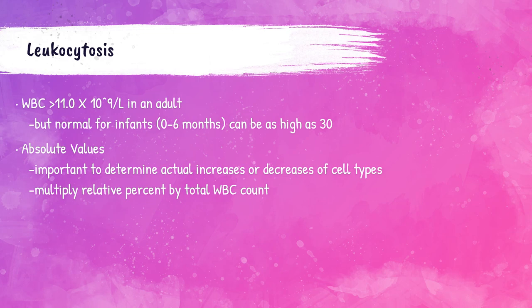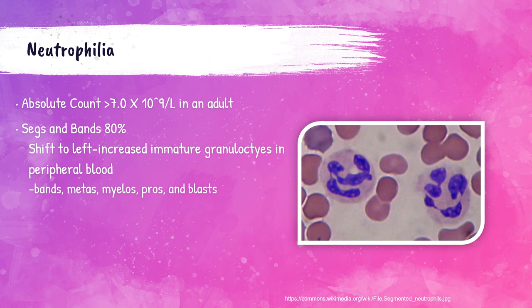Neutrophilia is defined as a neutrophil absolute count of greater than 7 times 10 to the 9th power per liter in an adult patient. Segmented or banded neutrophils will be 80% or higher. There is usually a left shift — an increase of immature granulocytes within the bloodstream — so you'll see banded neutrophils, metamyelocytes, myelocytes, and promyelocytes. Blasts can be in left shifts but not when associated with a non-malignancy.